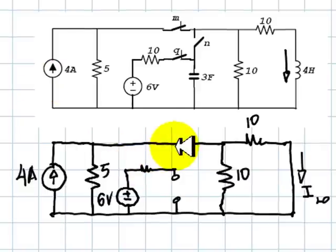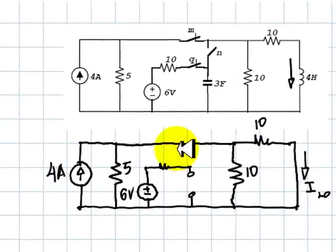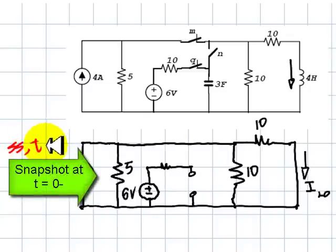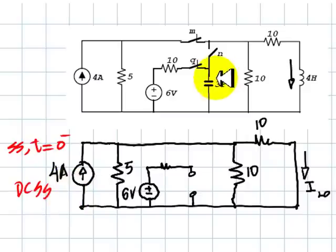We take a snapshot of the circuit at t equals 0 minus, because the circuit is in DC steady state. The capacitor can be represented by an open circuit and the inductor by a short circuit.